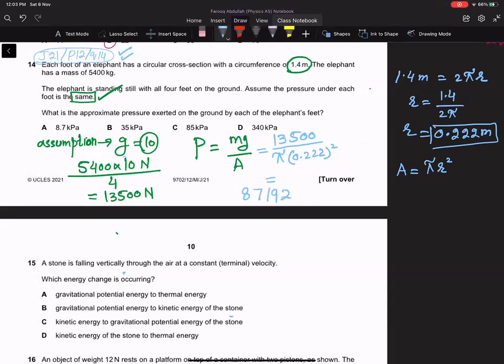If we use g as 9.81, it would obviously be answer C. So answer C should be here. This is because we use g as 10, and actually g is 9.81. That's why this difference is there.